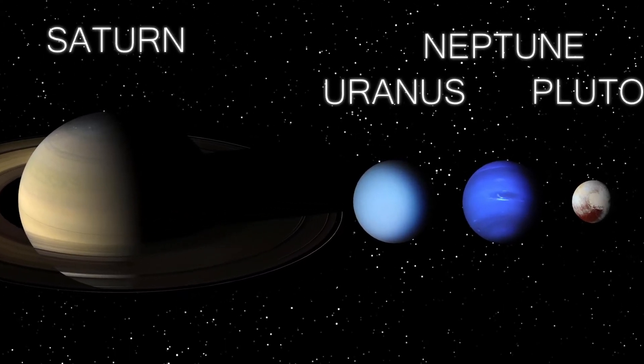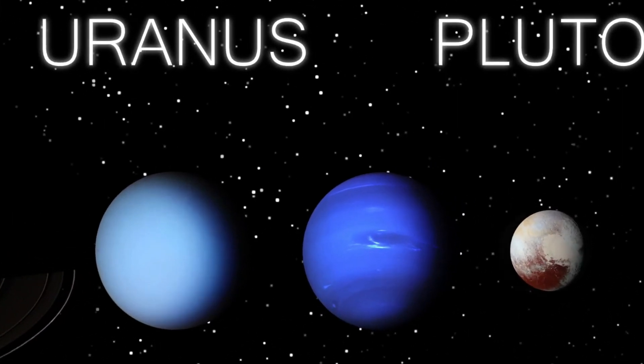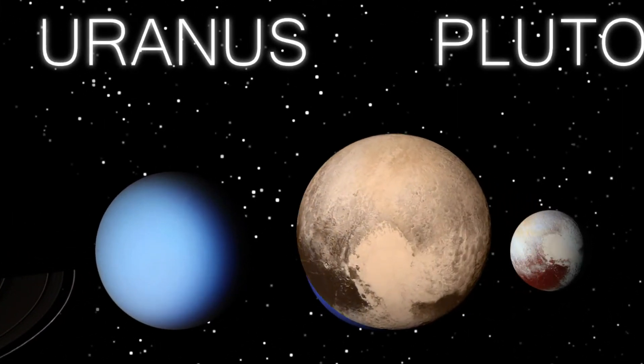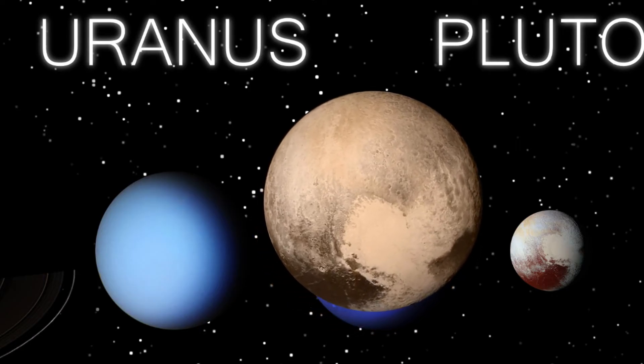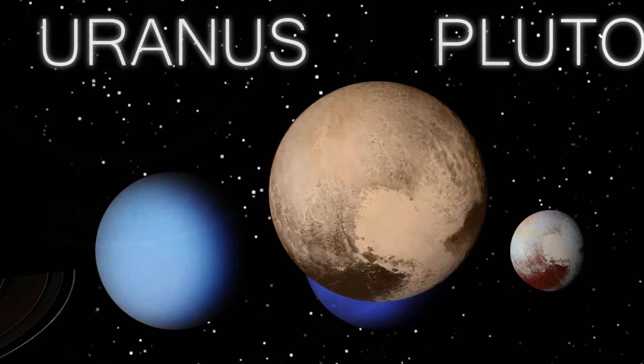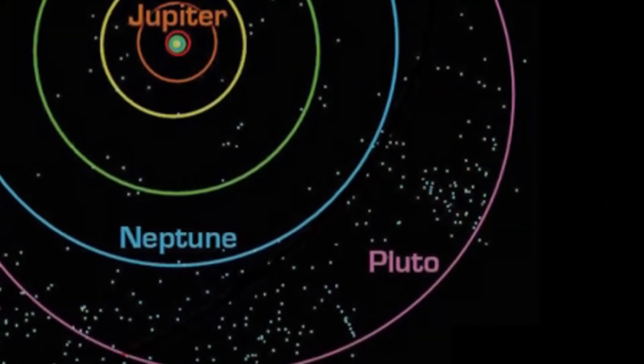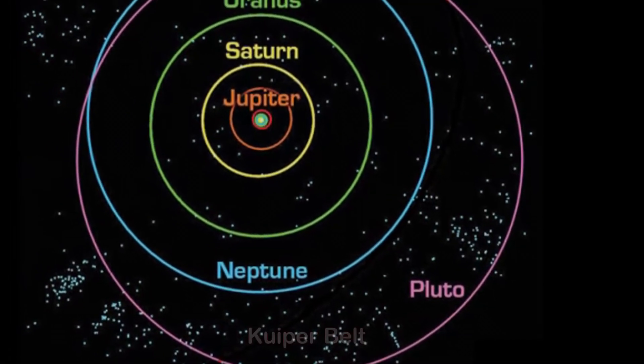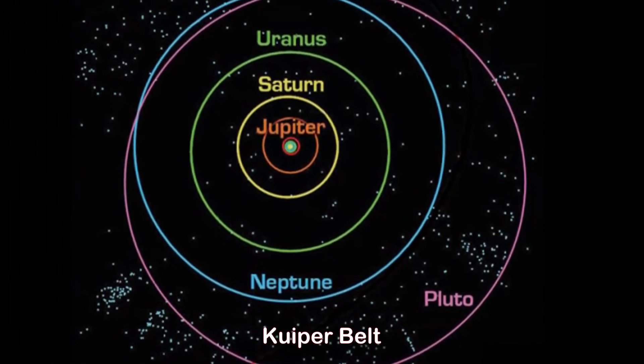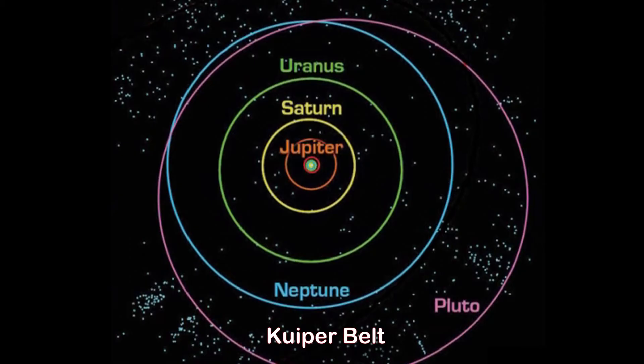But you might ask, what about Pluto, isn't that a planet? Shouldn't the number of other planets be eight, not seven? Well, not really. Not only is Pluto smaller than our moon, but the International Astronomical Union downgraded Pluto to a dwarf planet in 2006, because Pluto hadn't cleared its neighborhood from other objects, but instead shares its orbit with other bodies, including Neptune. In other words, Pluto does not have amraha.